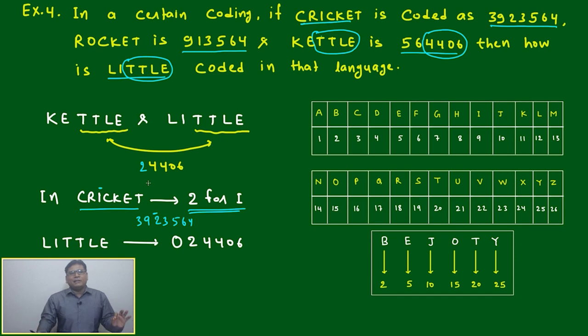Once you found this, you'll absolutely be able to mark it. But here options are not there, so we'll just go for L also. Where is L given? L is here also - this is the common part. L and L is represented by 0. This 4406, here it is 0 - zero represents L. This means we can say LITTLE can be represented as 024406. That will be the representation of LITTLE in this language, in this logic.